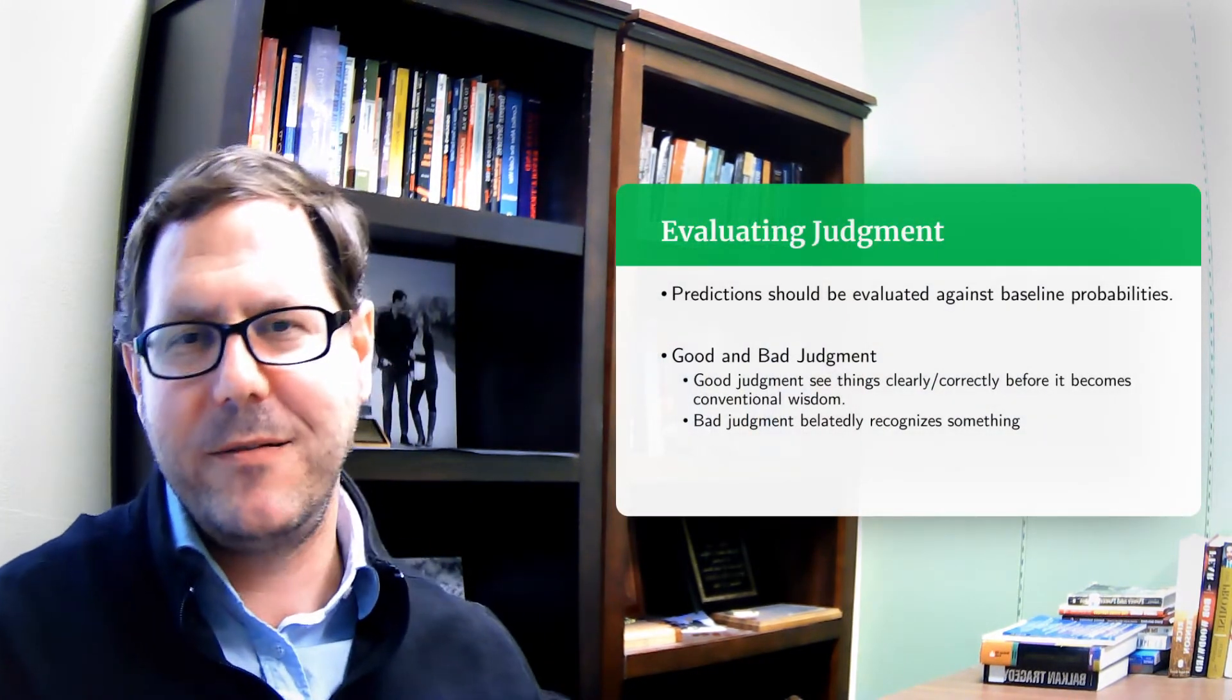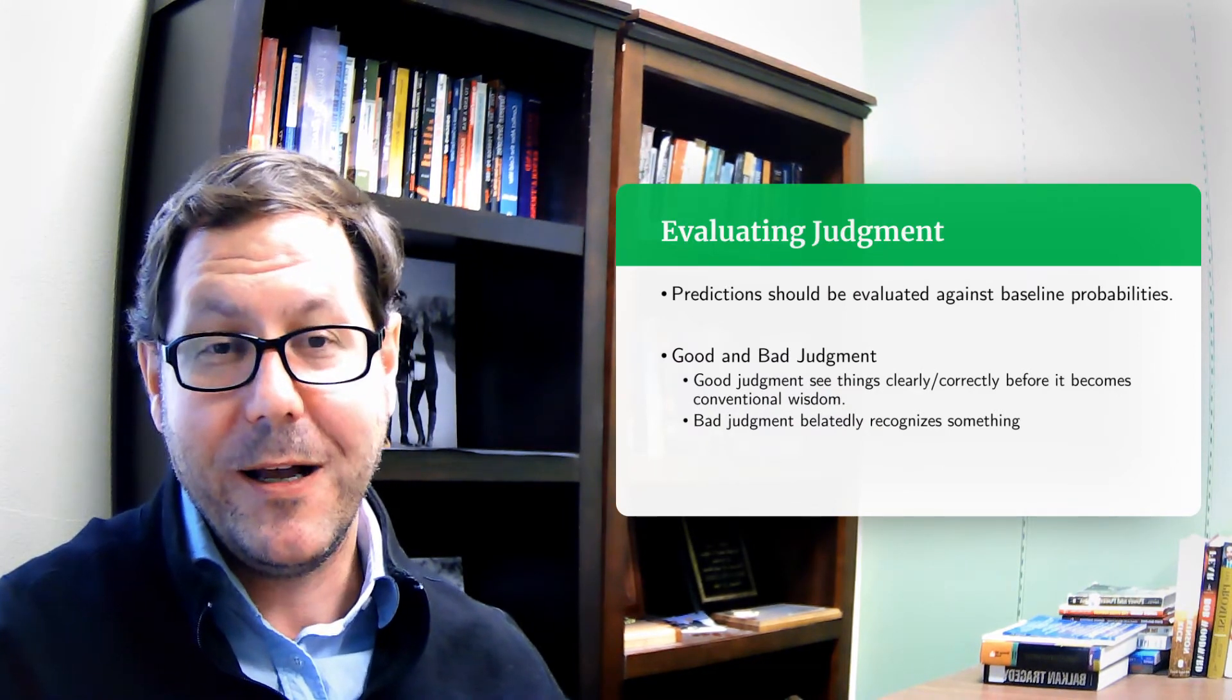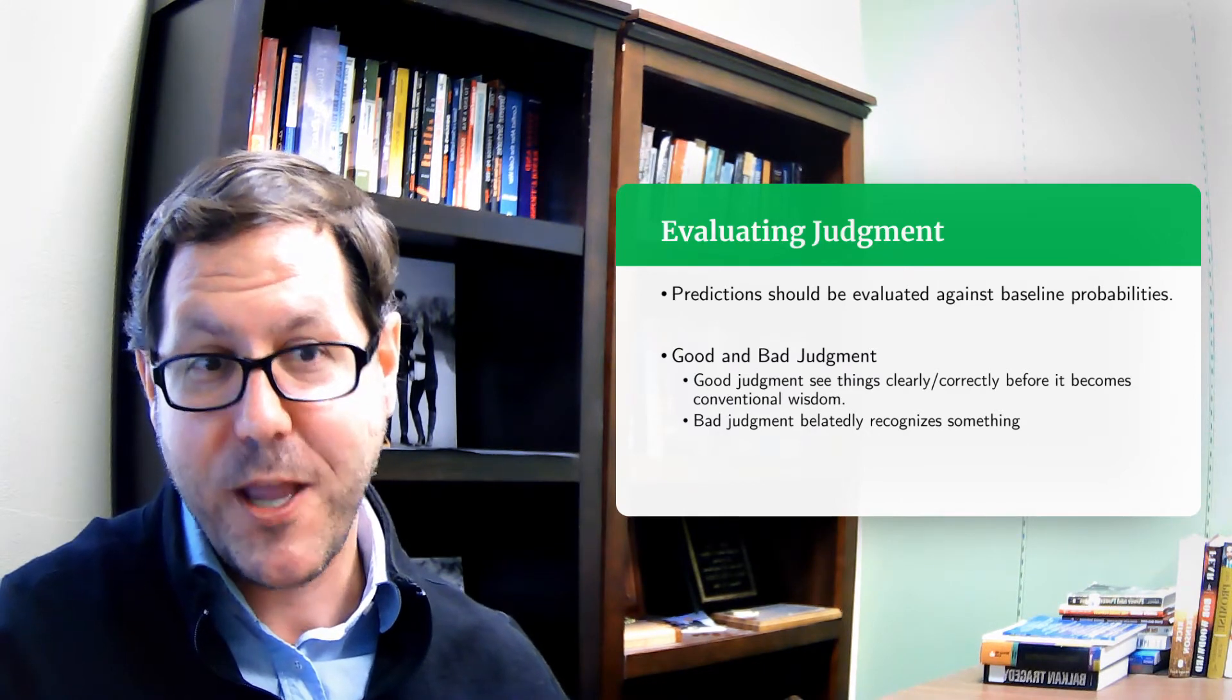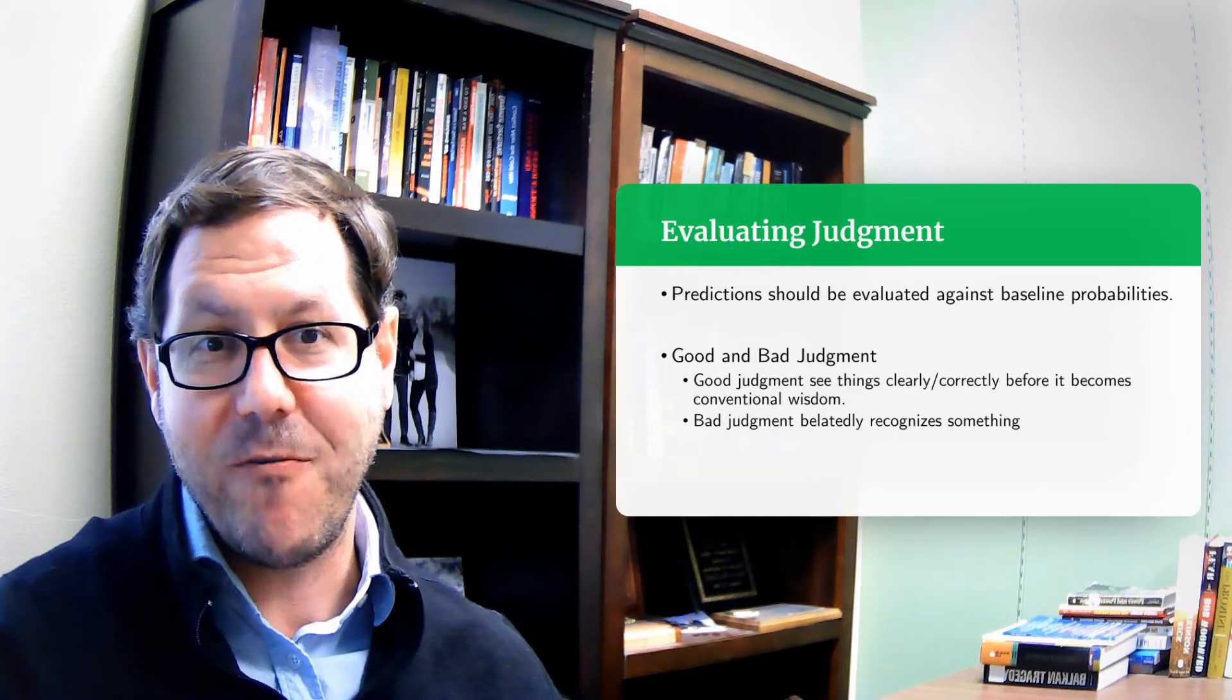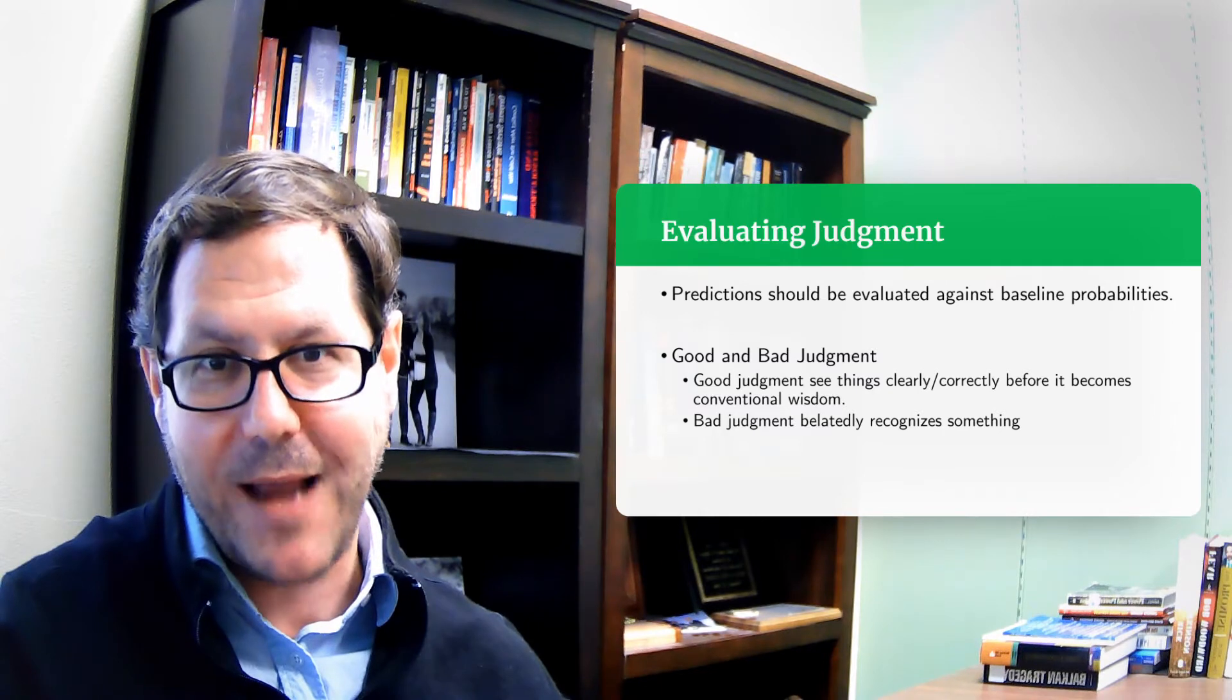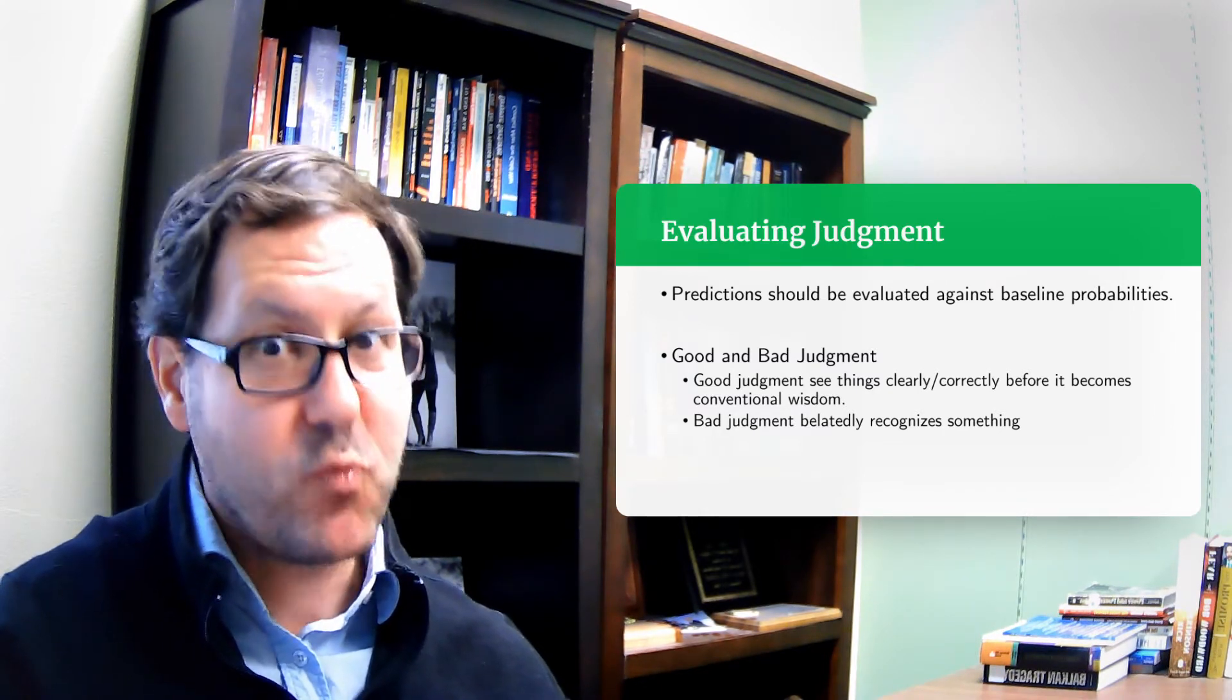We'll talk about how to tell if somebody is doing a good job or a bad job with forecasting or prediction. And Tetlock suggests that we should think about what makes a good forecast in terms of baseline probabilities. So if something is incredibly unlikely to happen and I predict that it will happen that's really impressive.